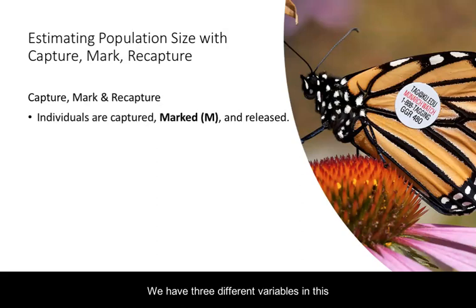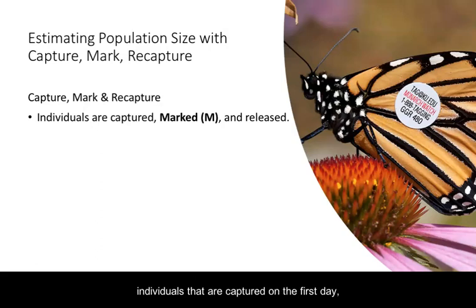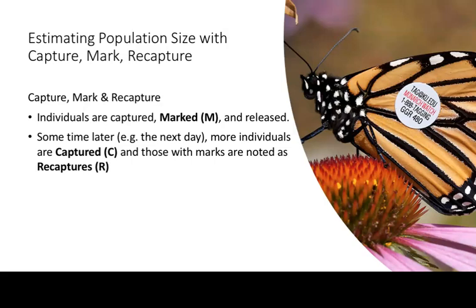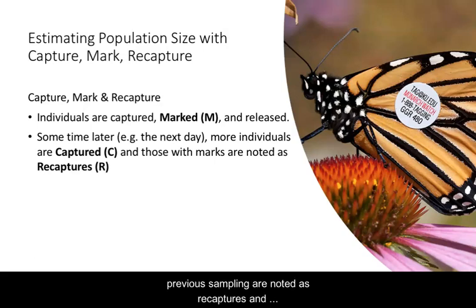There are three different variables in this method for estimating population size. The first is represented by the letter M — those are marked individuals captured on the first day, marked with some kind of marking to show they've been captured, and then released. We then go back out some day later and capture more individuals; the number captured on the second day is represented by the letter C, and those with marks from the previous sampling are noted as recaptures and represented with the letter R.